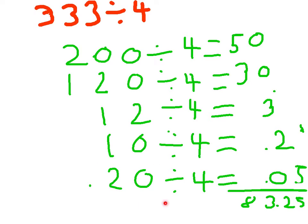20 divided by 4 is, I did 0.5. And when you add 50 plus 30 plus 3 plus 0.2 plus 0.05 equals 83.25.